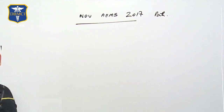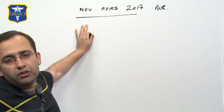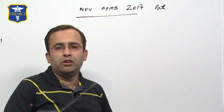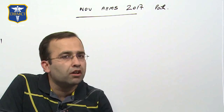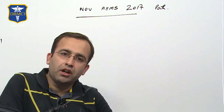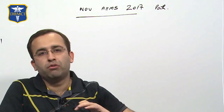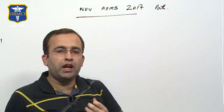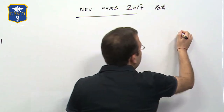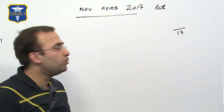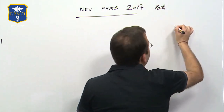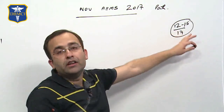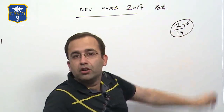There were 17 questions from pathology in the November AIIMS 2017 paper. They were not very tough — out of 17, only 2 or 3 were tough, the rest 14 were moderate. These moderate 14 questions are the ones which actually get your rank. As a student, you should be targeting at least 12 to 15 of these — 12 is the basic minimum, 15 is an extremely good number.